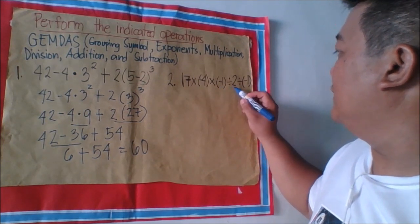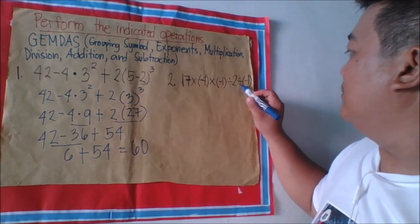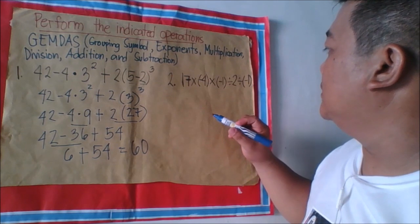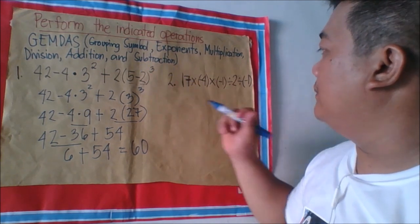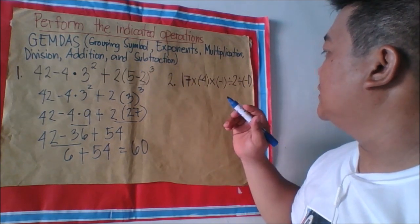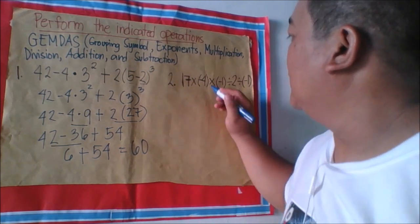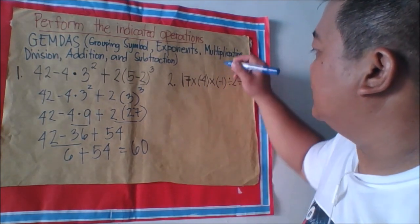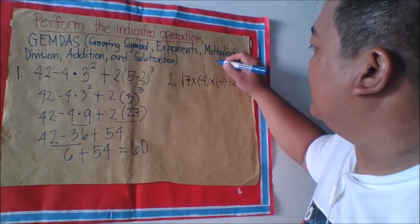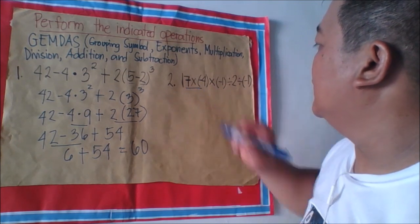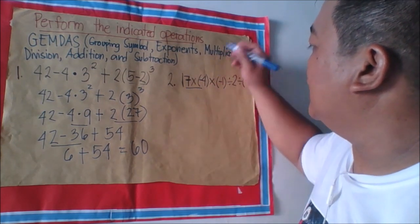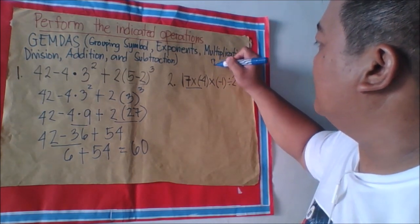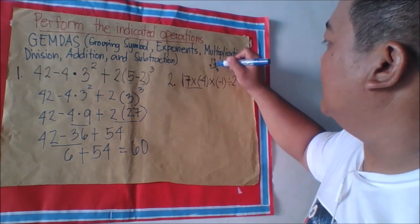In the order of operations, we first operate the multiplication. So we have 17 times negative 4 times negative 1, divided by 2, divided by negative 1. We follow left to right for multiplication and division.